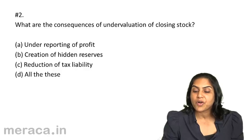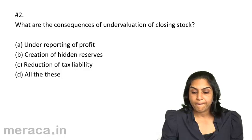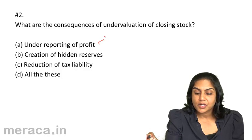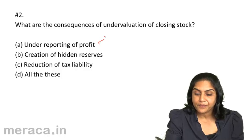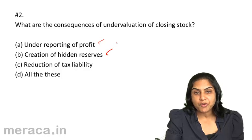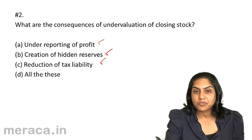The consequences of undervaluation of closing stock: if we undervalue closing stock, our profit will be underreported. If we undervalue the closing stock, there are in a way hidden reserves because the value of stock is not shown correctly. If we have reported profits less, there would be a reduction in tax liability. Therefore, the correct answer should be D, all of these.